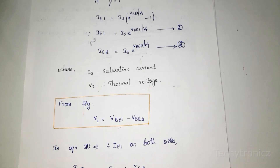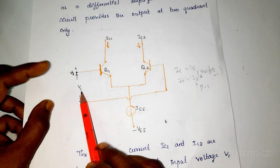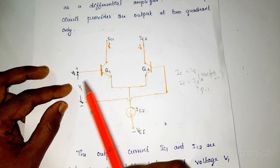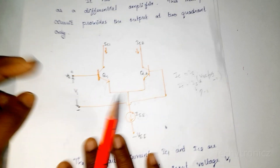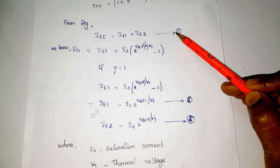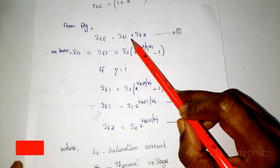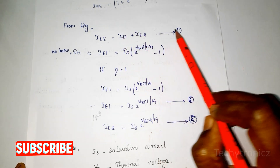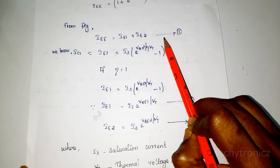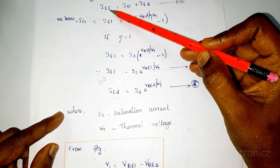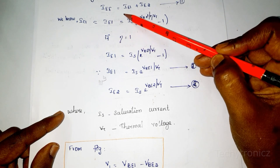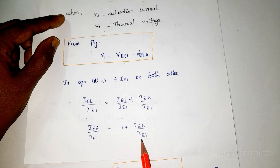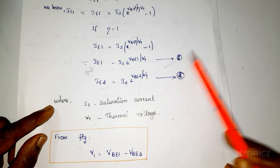From the figure, the input voltage V1 equals VBE1 minus VBE2, obtained by applying KVL around the loop. This is the first equation. Now we divide equation 1 by IEE1 on both sides: IEE / IEE1 = (IEE1 + IEE2) / IEE1, giving 1 + IEE2/IEE1. We then substitute the expressions for IEE1 and IEE2 from equations 2 and 3.